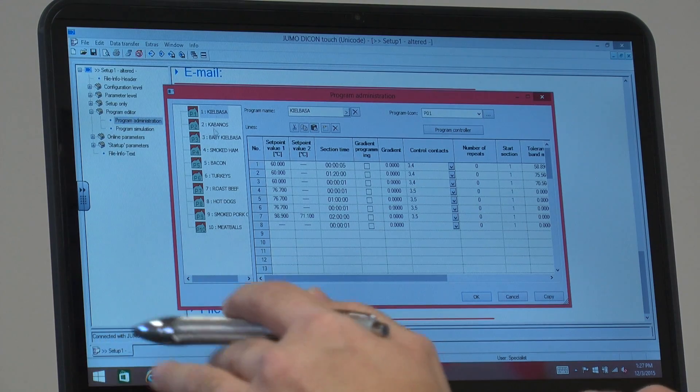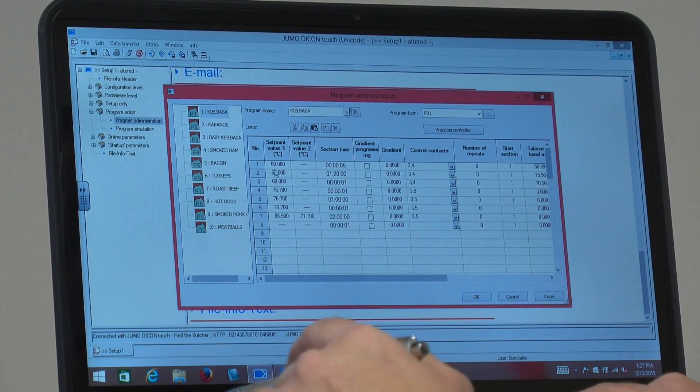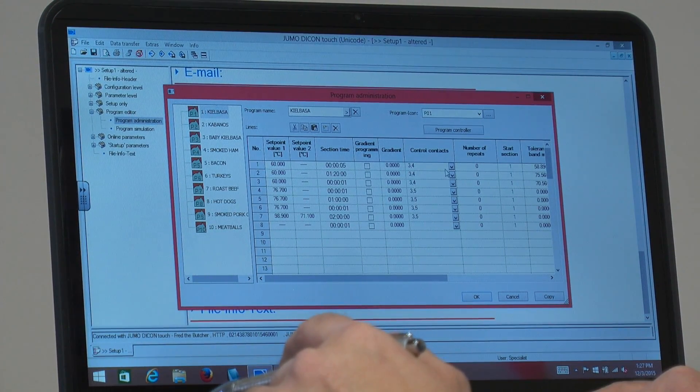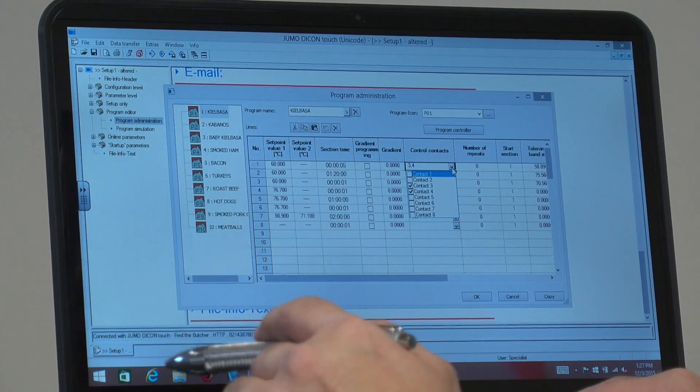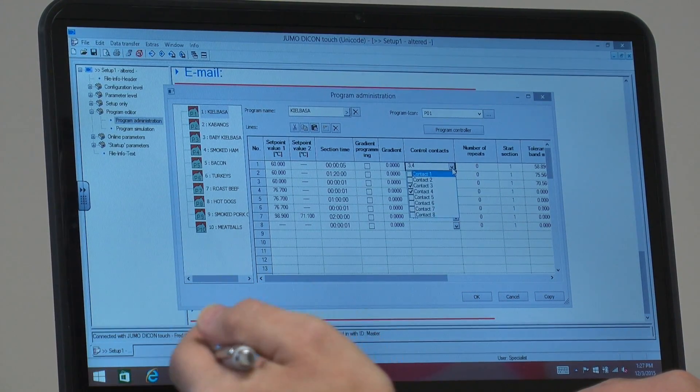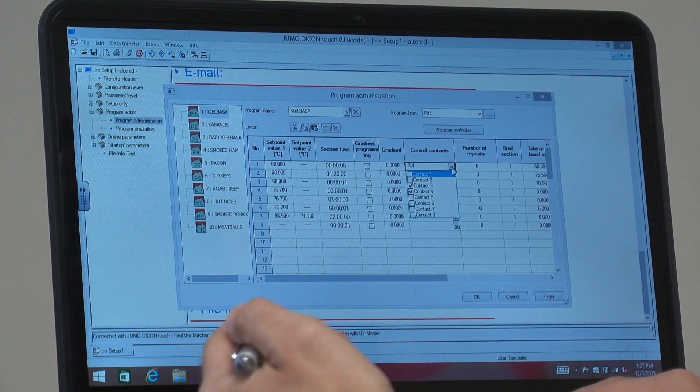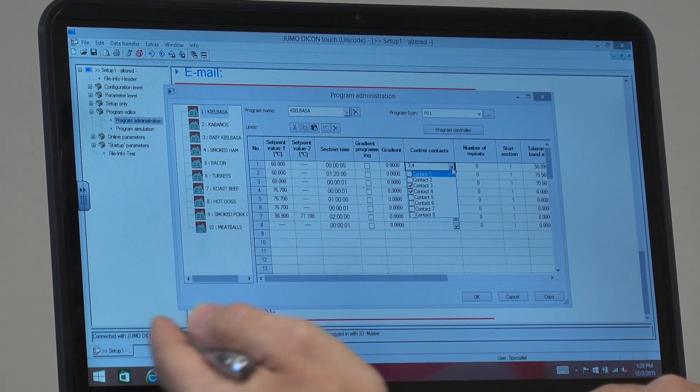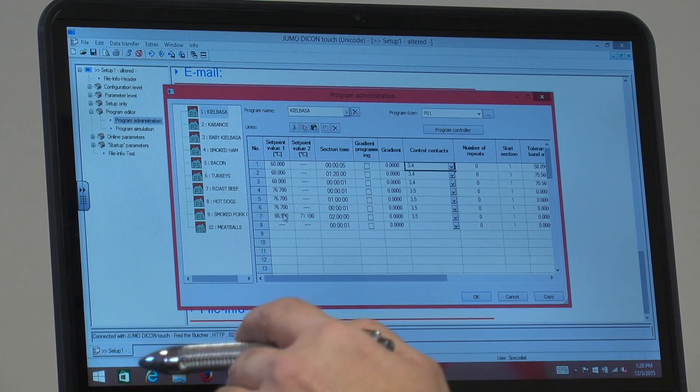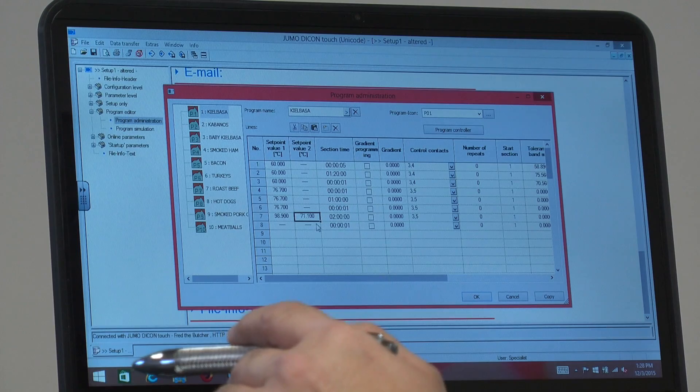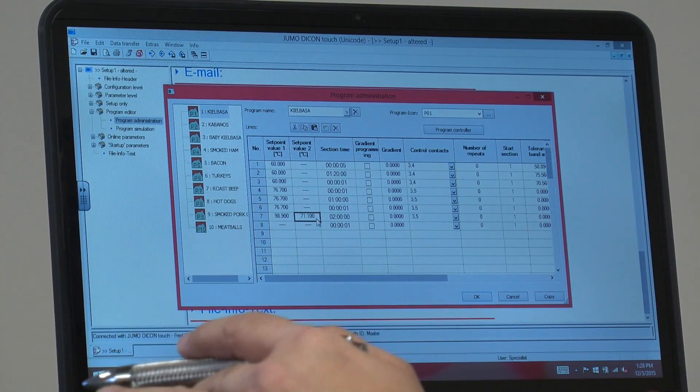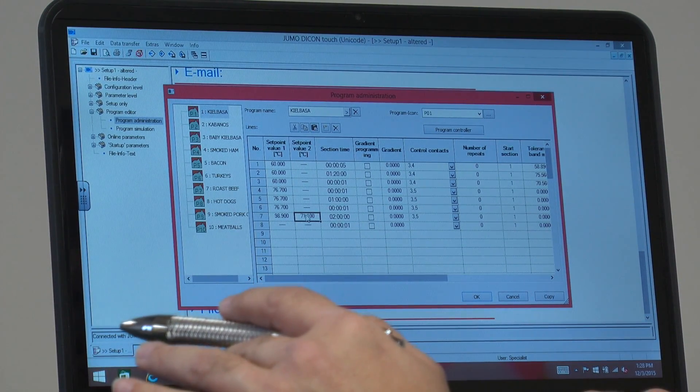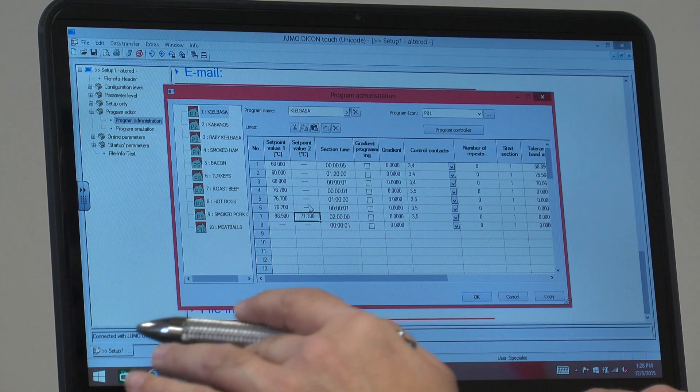The key one here is the program administration. There's ten programs, different types of meats that they have. There's different temperatures. There's different relays that are going to be triggered for, in their case, smoke. There's a damper. There's steam that's used for generating humidity. Those options are going to be turned on and off and then here at the end in this particular case when it reaches 71.1 degrees Celsius the program will be ending.